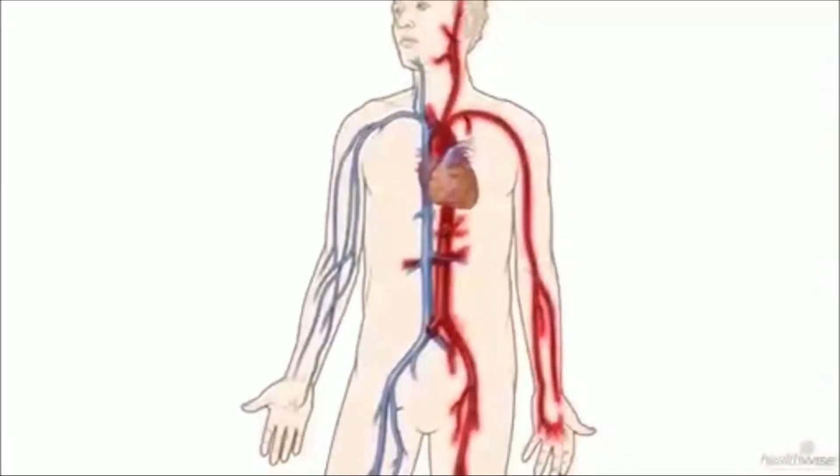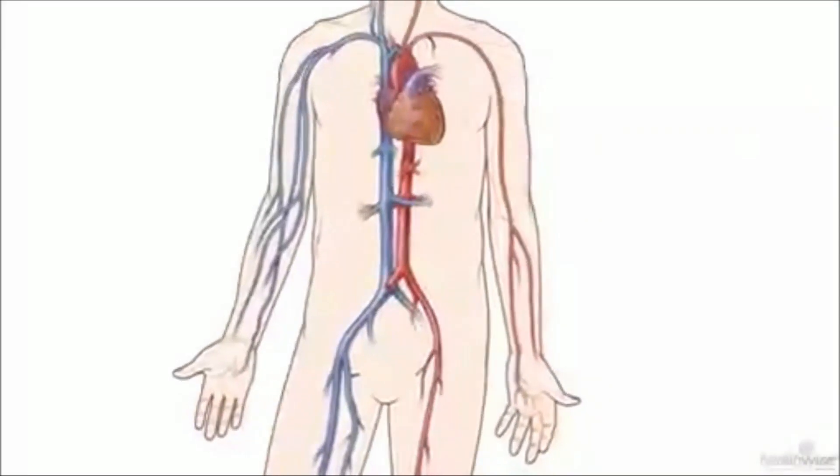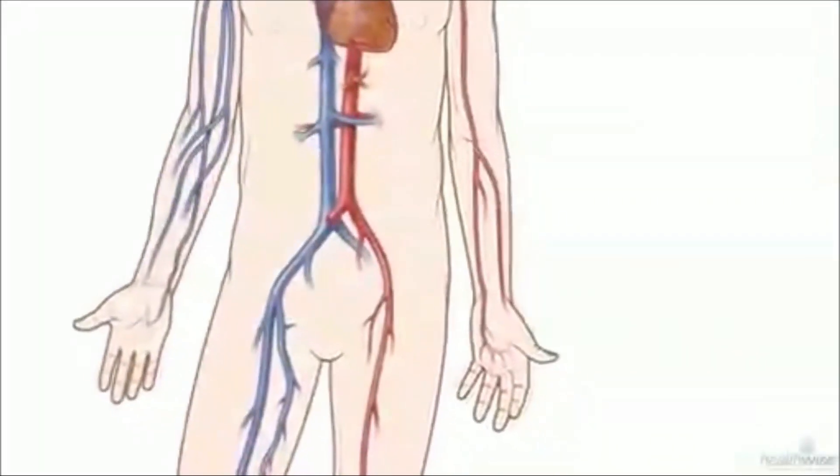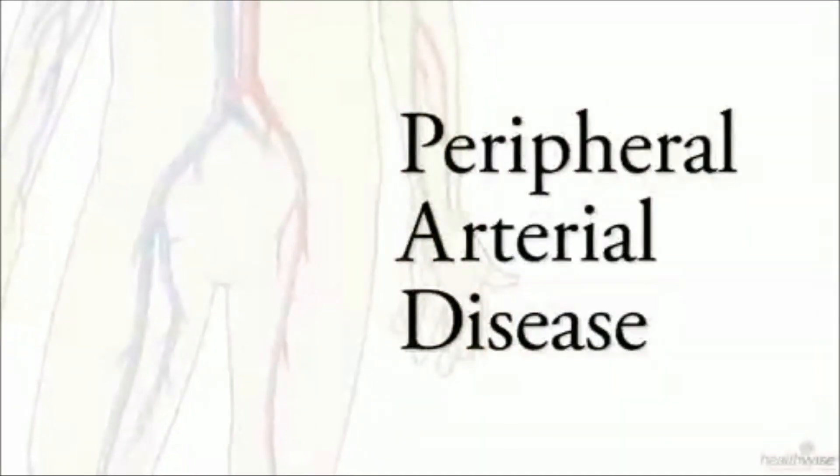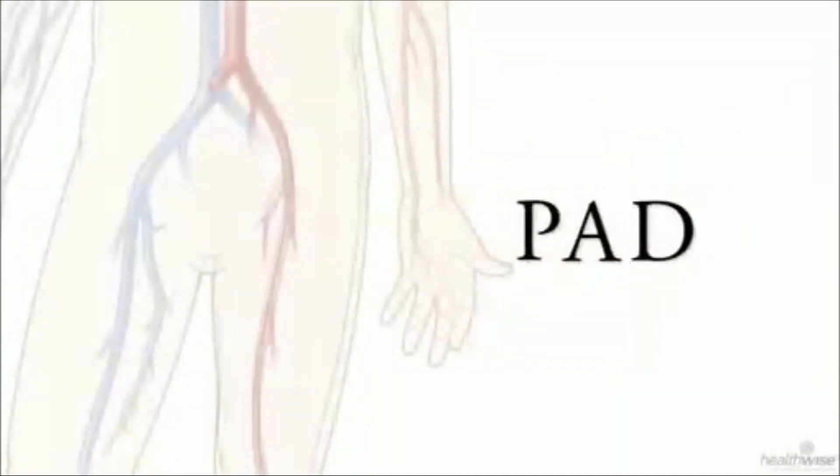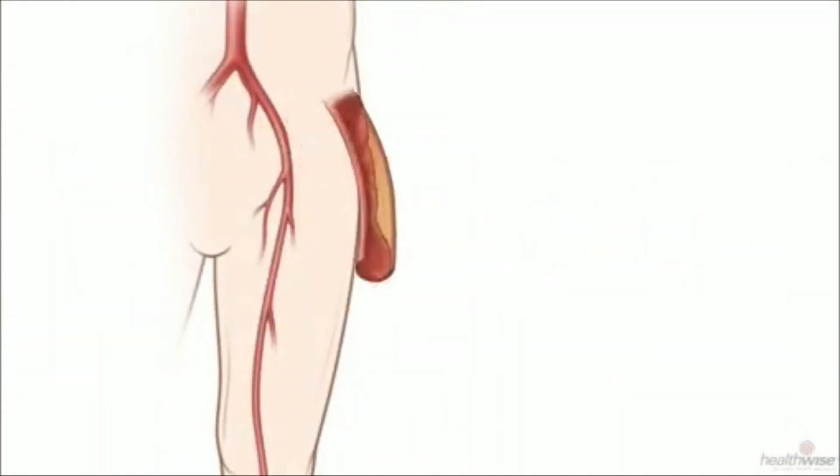Your arteries are the blood vessels that carry oxygen-rich blood to the muscle and tissue in your body. It's a really important job, but if you have peripheral arterial disease or PAD, the arteries in your legs can become narrowed or blocked by plaque.